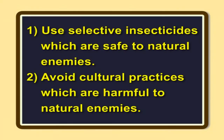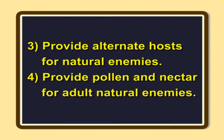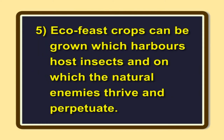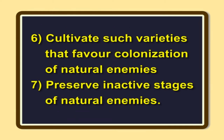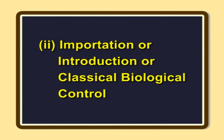Here, we consider only those pest control measures that won't destroy the natural enemies. Important conservation measures are: use selective insecticides which are safe to natural enemies; avoid cultural practices which are harmful to natural enemies; provide alternate hosts for natural enemies; provide pollen and nectar for adult natural enemies. Eco-feast crops can be grown which harbor host insects and on which natural enemies thrive and perpetuate. Cultivate varieties that favor colonization of natural enemies. Preserve inactive stages of natural enemies.